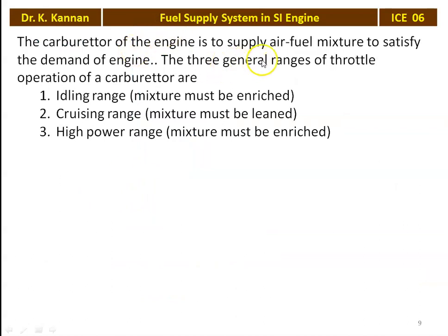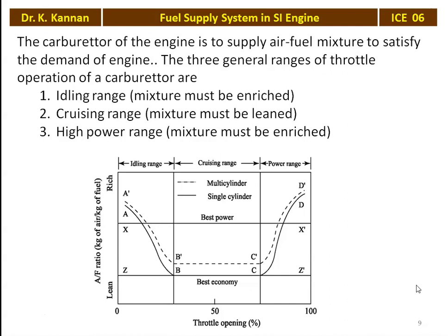The carburetor of the engine is to supply air fuel mixture to satisfy the demand of the engine. The three general ranges of throttle operation of the carburetor are: idling range — requires rich mixture; cruising range — requires lean mixture; and high power range — requires rich mixture again. Look at the diagram: x-axis shows throttle opening from 0 to 100 percent; y-axis shows lean mixture at the bottom and rich mixture at the top. We have best power line X-X' and best economy line Z-Z'. The continuous line is for single cylinder engine and the dashed line for multi-cylinder engine, covering idling range, cruising range, and power range.